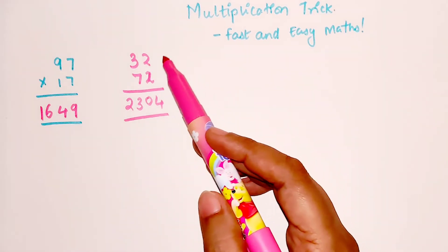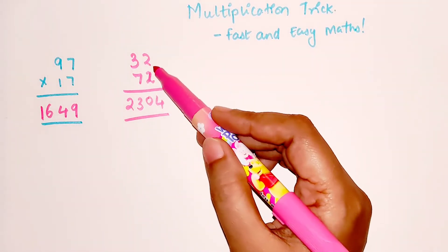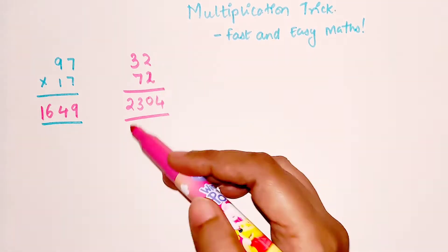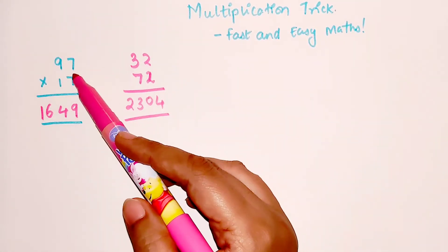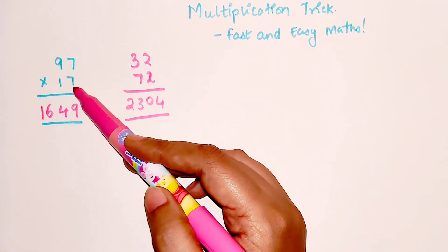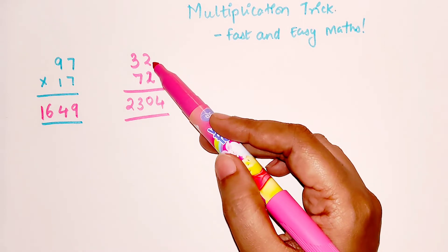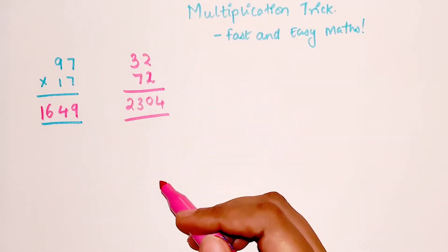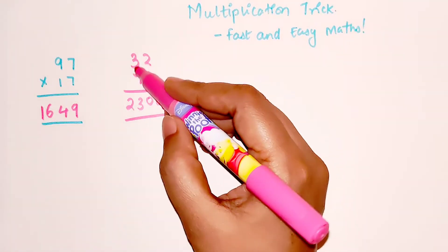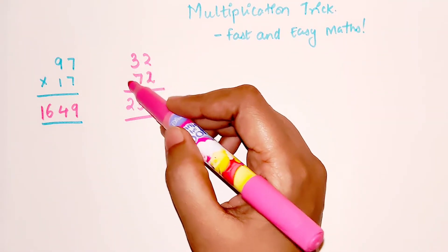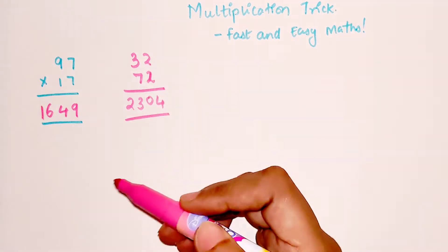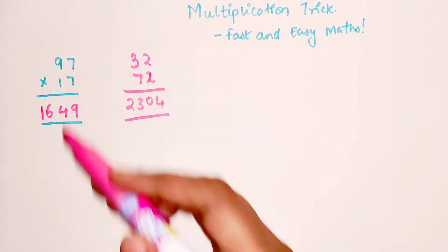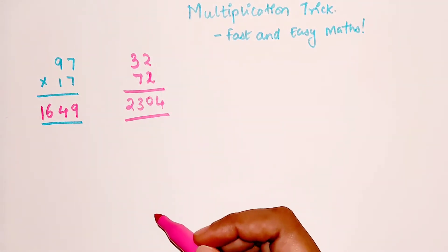The only thing for this trick to work is there are two things which you need to remember. The unit digits of both your multiplier and your multiplicand has to be same. In both cases, here there was 7 and here there is 7, here there was 2 and 2. And the next thing is that the tenth digit should add up to 10. 3 plus 7 gets you 10, 9 plus 1 also gets you 10.